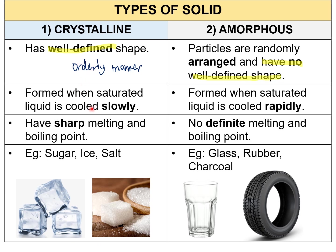Crystalline solid is formed when a saturated liquid is cooled slowly, while amorphous solid is formed when a saturated liquid is cooled rapidly. Crystalline solid has a very sharp, well-defined melting and boiling point, while amorphous solid has no definite melting and boiling point. Examples of crystalline solid include sugar, ice, and salt. Examples of amorphous solid include glass, plastic materials such as rubber, and charcoal.